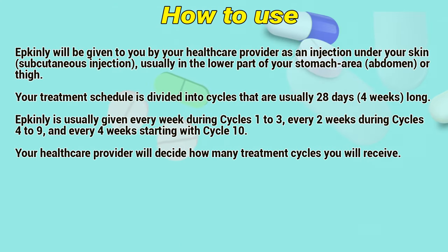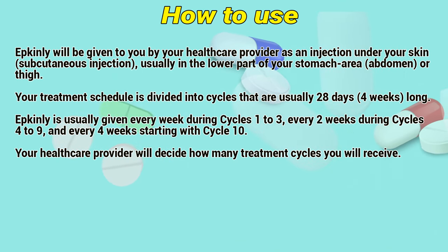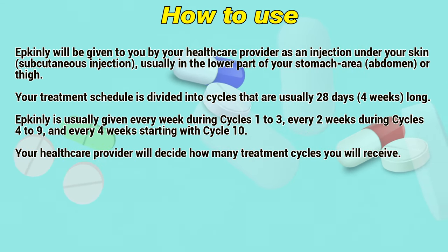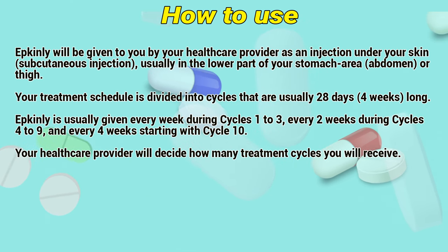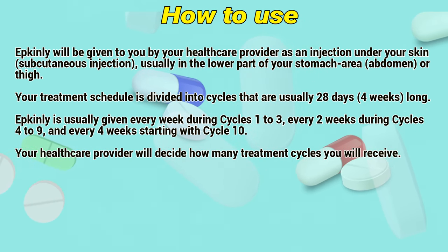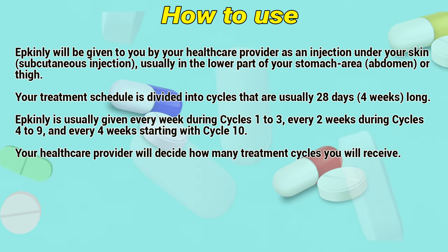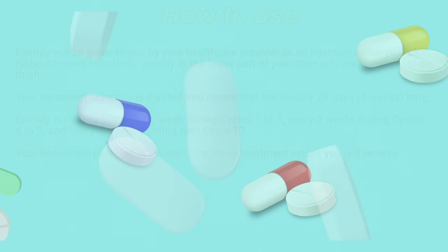Epkenly will be given to you by your healthcare provider as an injection under your skin, a subcutaneous injection, usually in the lower part of your stomach area, abdomen, or thigh. Your treatment schedule is divided into cycles that are usually 28 days, 4 weeks long. Epkenly is usually given every week during cycles 1 to 3, every 3 weeks during cycles 4 to 9, and every 4 weeks starting with cycle 10. Your healthcare provider will decide how many treatment cycles you will receive.